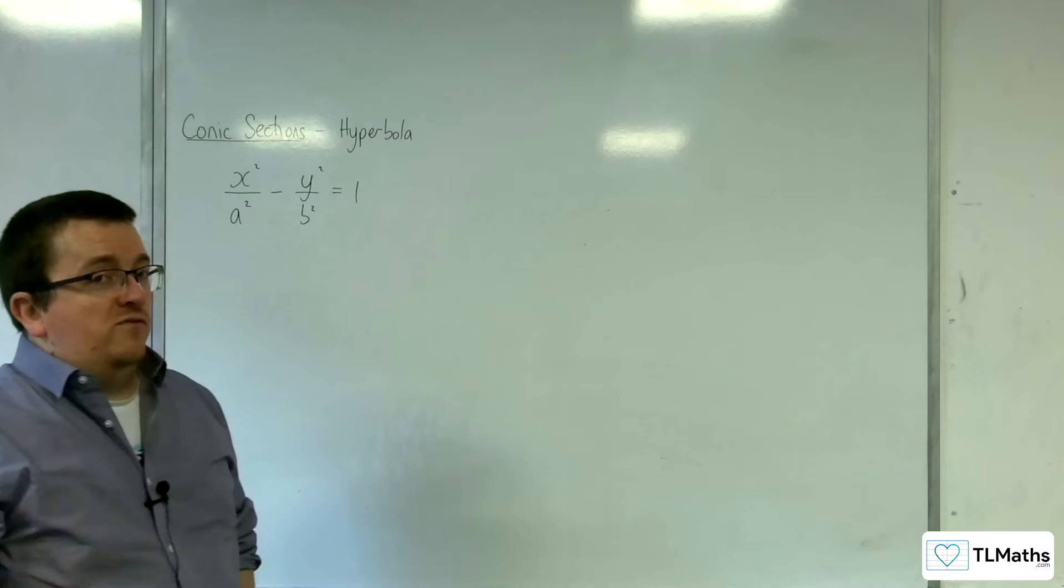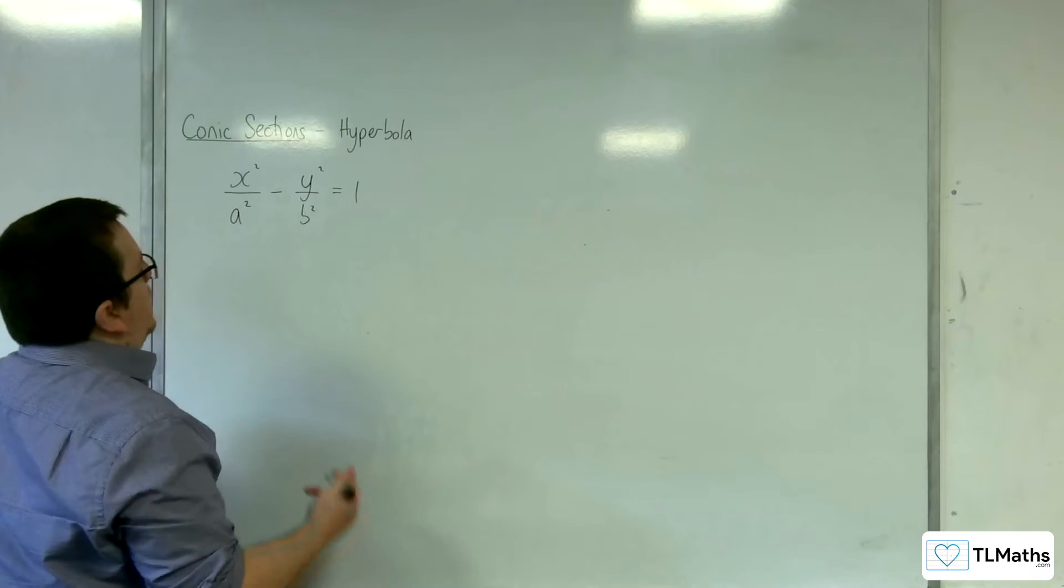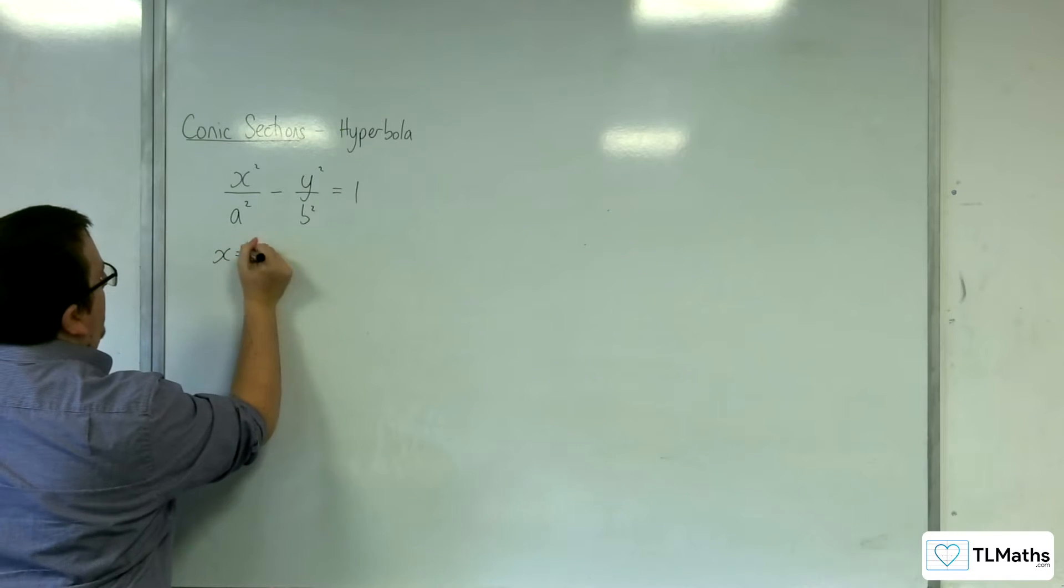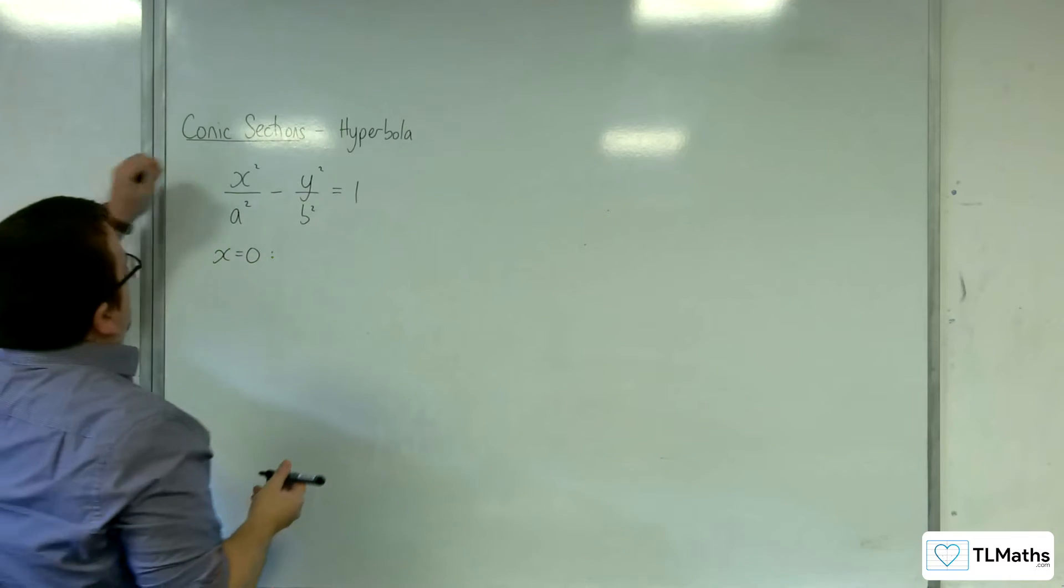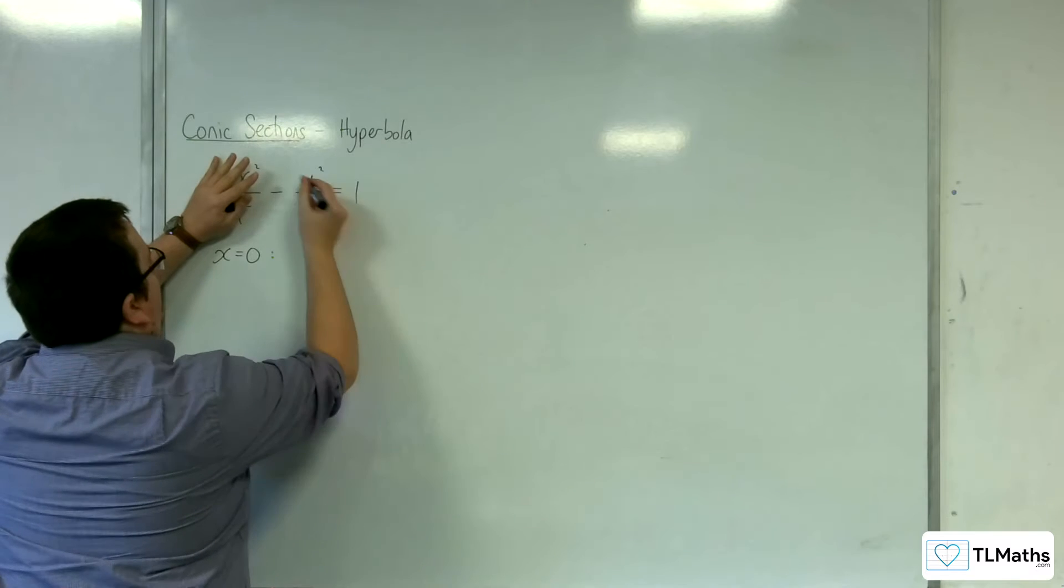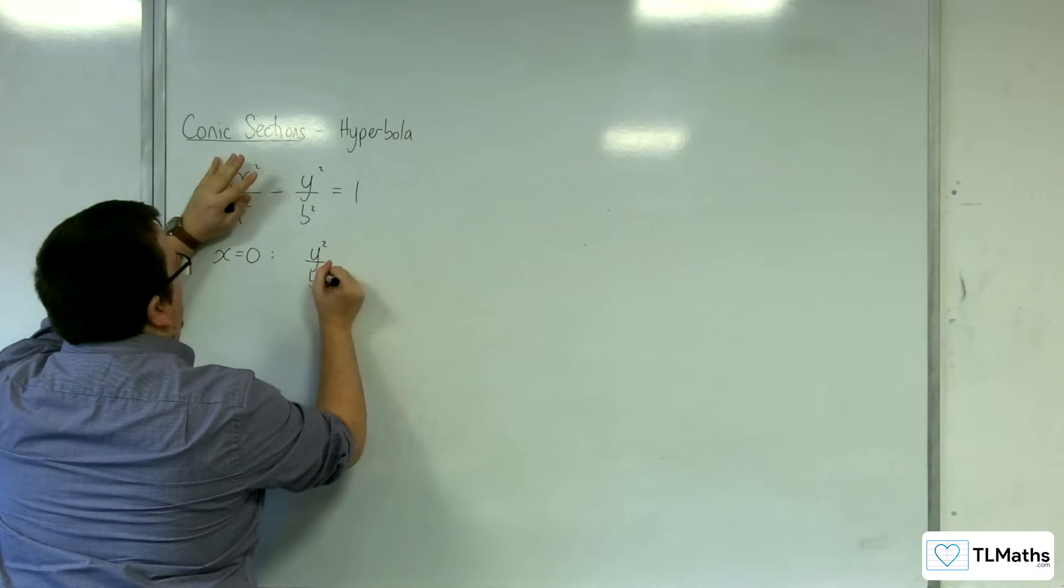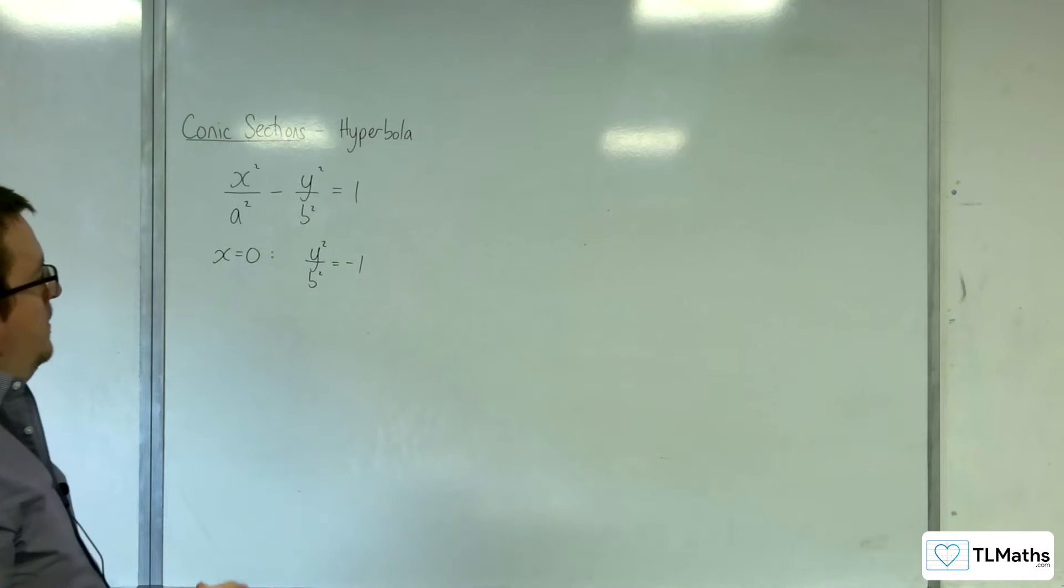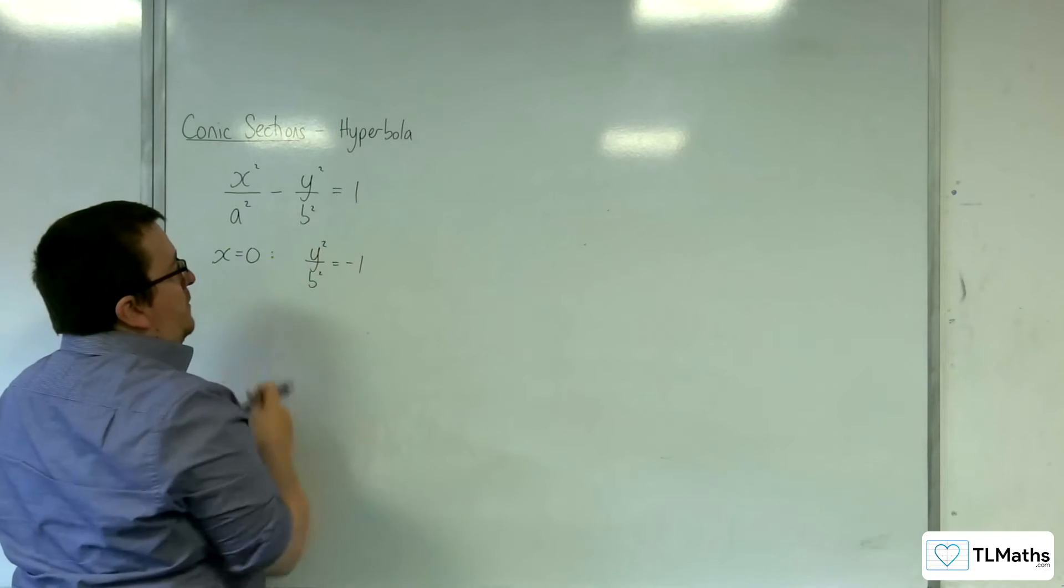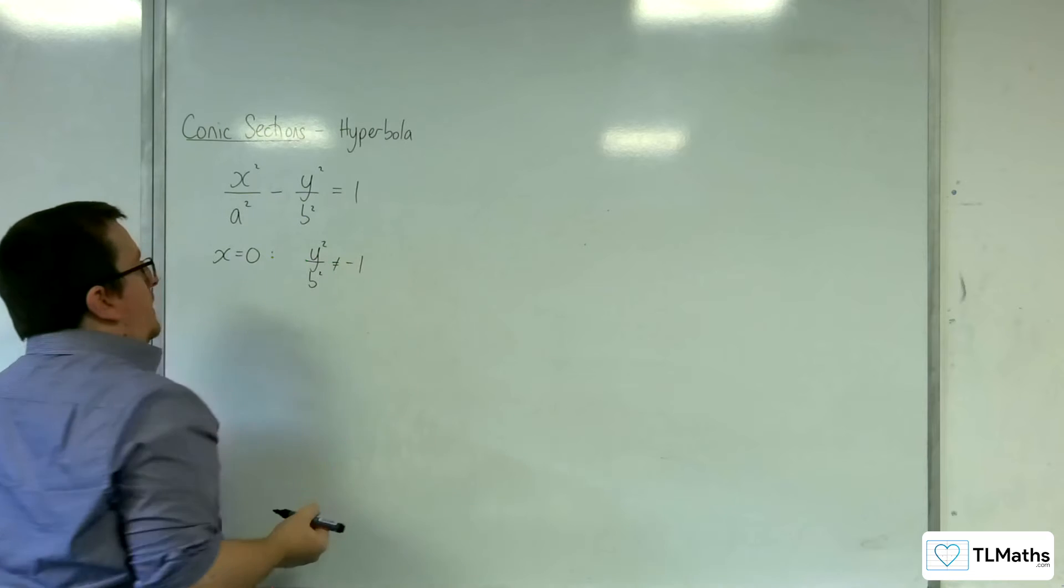Now, we'd be interested to know what this graph really looks like. So the first thing you might do is try and find out where it crosses the x and y axes. So if we put in x equals 0, then that term's gone, and we get left with this. But the problem there is that then we've got y squared over b squared would have to be equal to negative 1. But y squared over b squared is going to be positive. There's no way that that could be minus 1, with y and b both being real numbers.